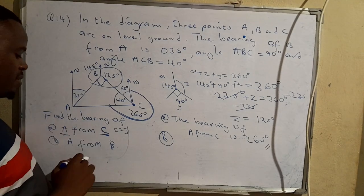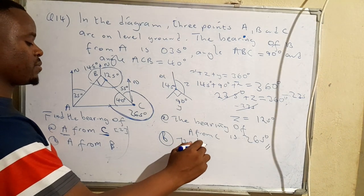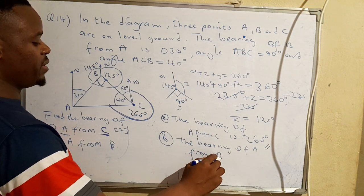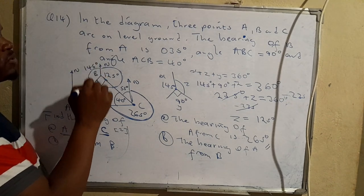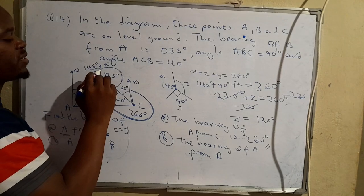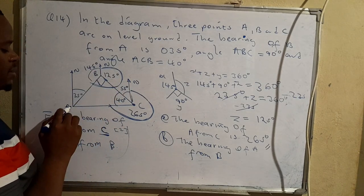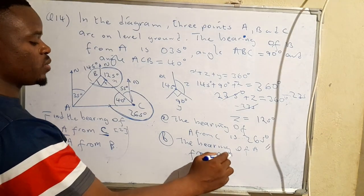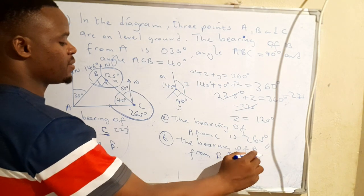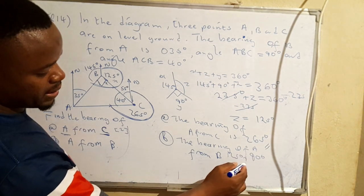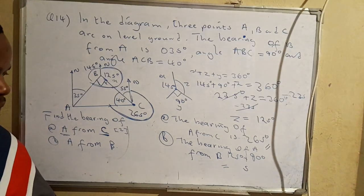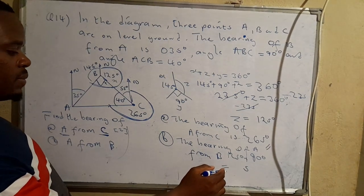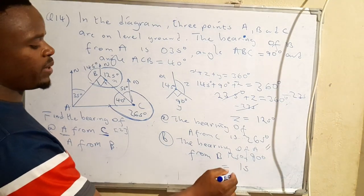For the bearing of A from B, you go to B where the north has already been drawn. Draw a vertical line, then measure clockwise from north to A. We add 125° plus 90°, which equals 215°. So the bearing of A from B is 215°.